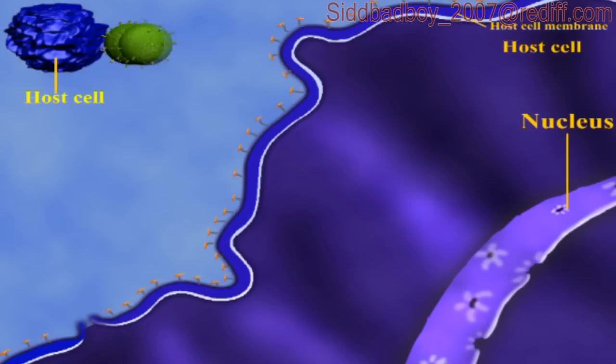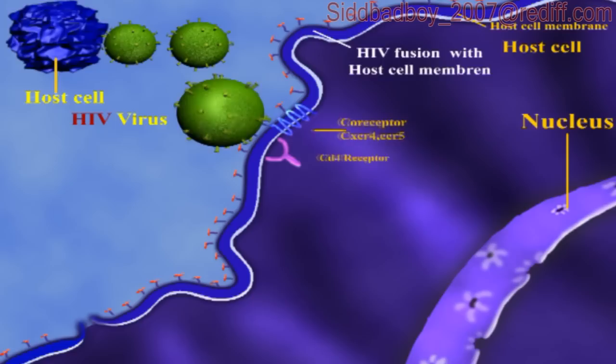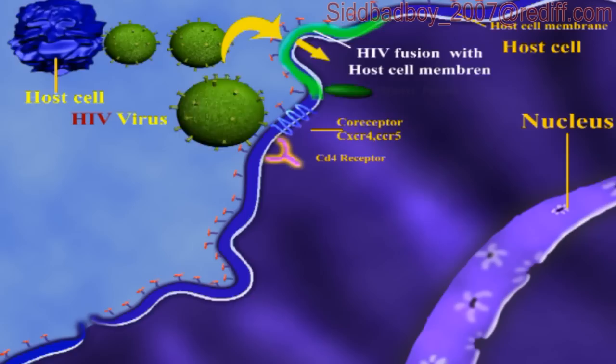First of all, the HIV virus comes out of the host cell and enters into another host cell. Then the co-receptor and receptor allow the HIV virus to fuse with the host cell membrane. Now the HIV virus uses the matrix protein.